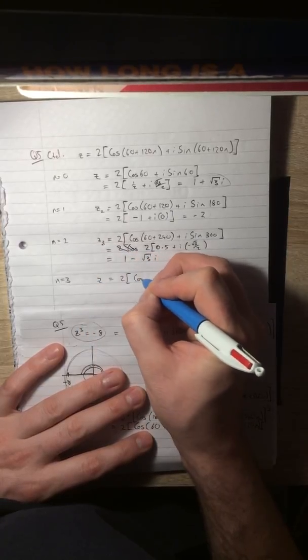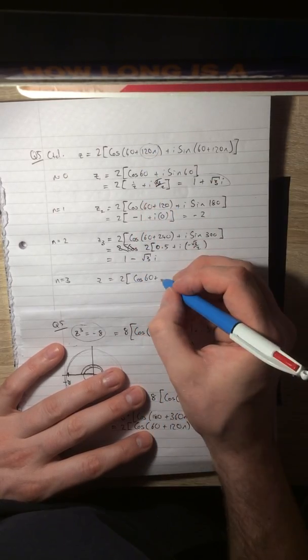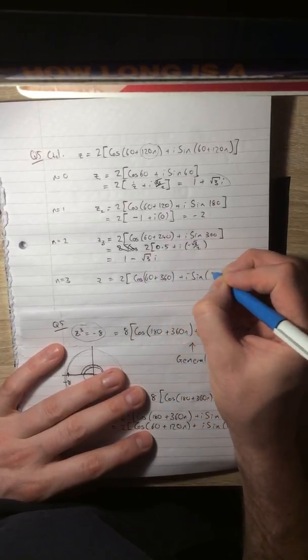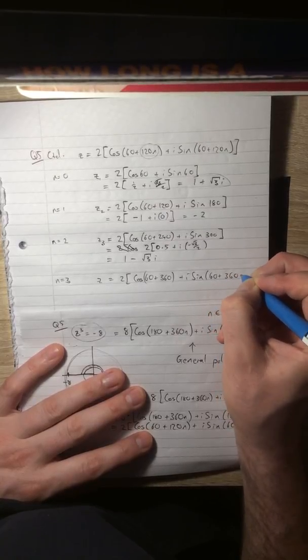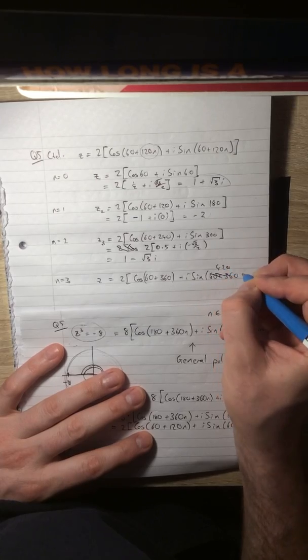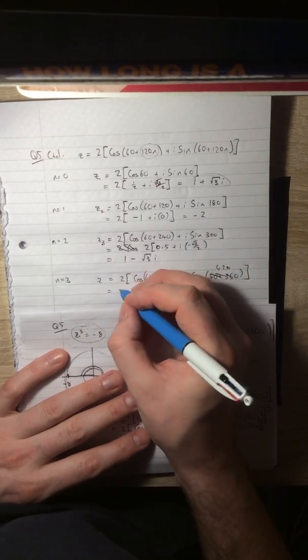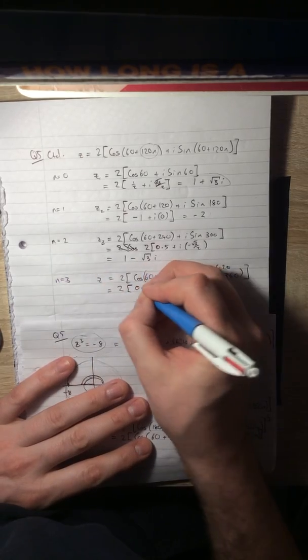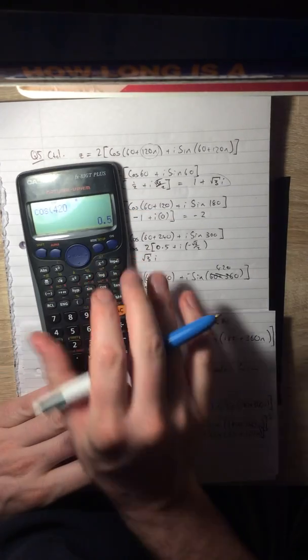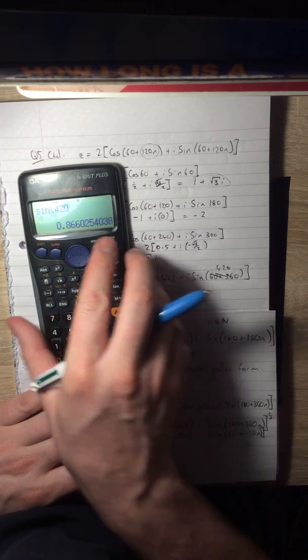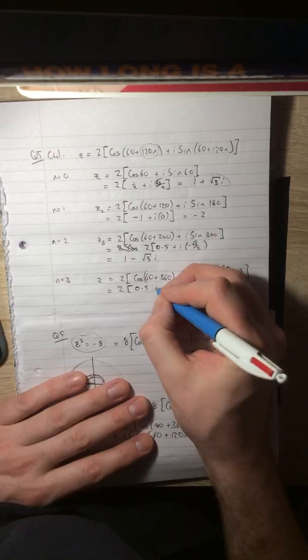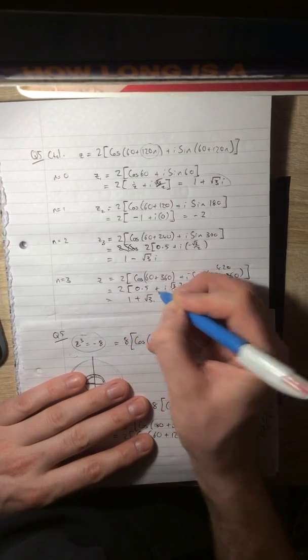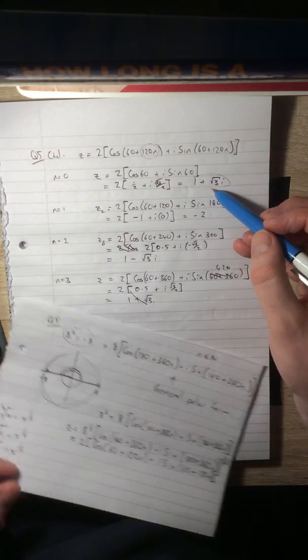So let's have a look at that one. What's that going to be? It's going to be 2 cos(60 + 360), so we're back to where we started in terms of a rotation, plus i sine 420. So that's 2 times cos 420 is 0.5, same as cos 60. And the sine of 420 is √3/2, same as sine 60.